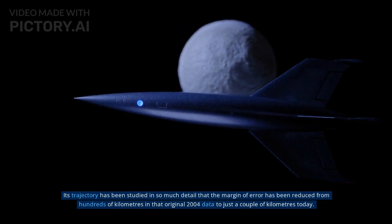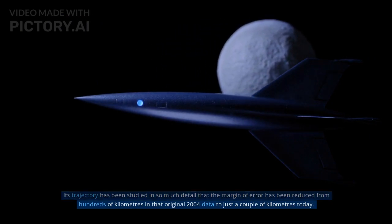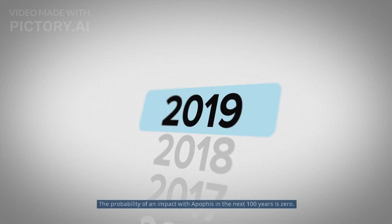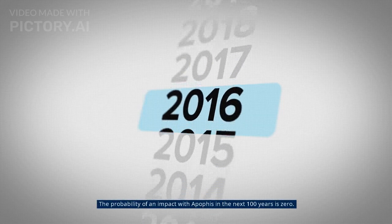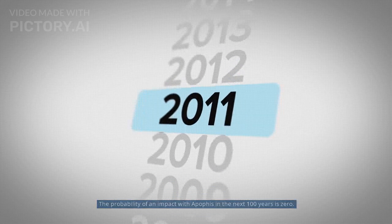Its trajectory has been studied in so much detail that the margin of error has been reduced from hundreds of kilometers in that original 2004 data to just a couple of kilometers today. The probability of an impact with Apophis in the next 100 years is zero.